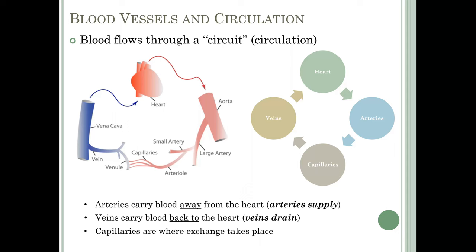Capillaries, between the arteries and veins, is where exchange actually takes place between the nutrients and gases in the blood and what is in the interstitial fluid — the fluid in the tissues. Capillaries are the only site of exchange between the blood and the rest of the tissues of the body. The focus of this chapter will be on the different types of vessels: arteries, capillaries, and veins.